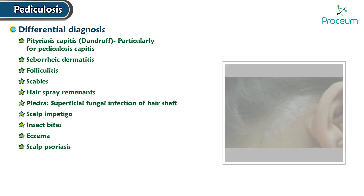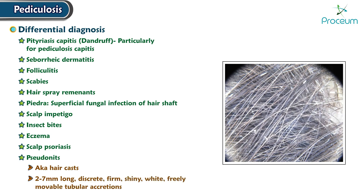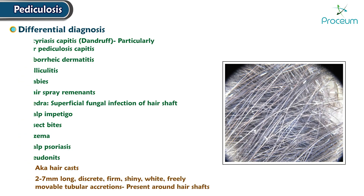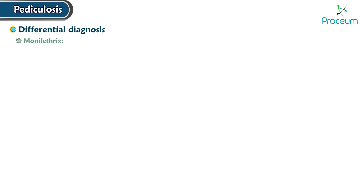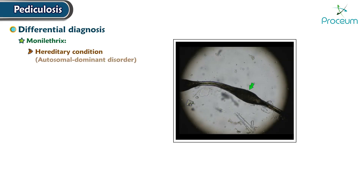Another diagnosis is pseudonits, also known as hair casts. They are 2-7 mm long, discrete, firm, shiny, white, and freely movable tubular accretions that present around the hair shafts. One last diagnosis is monilothrix, a hereditary condition considered to be an autosomal dominant disorder where the hair shaft shows a beaded appearance under a light microscope.